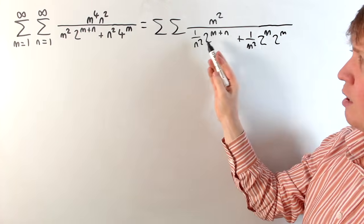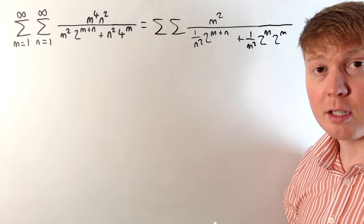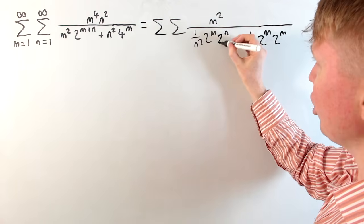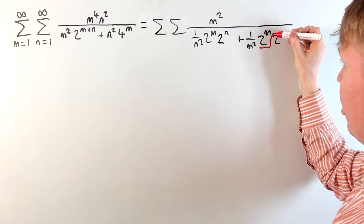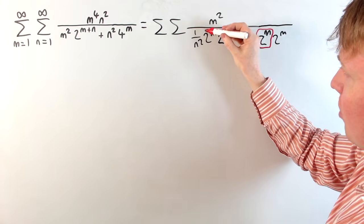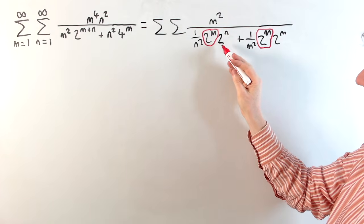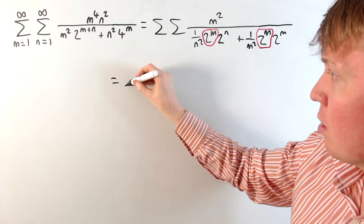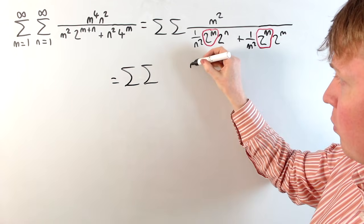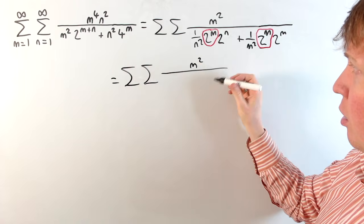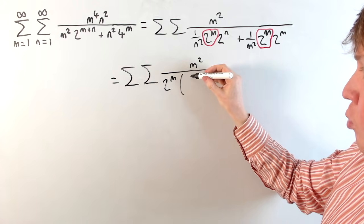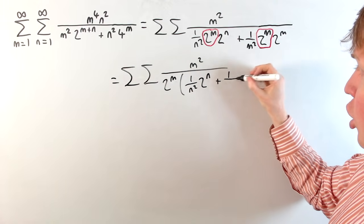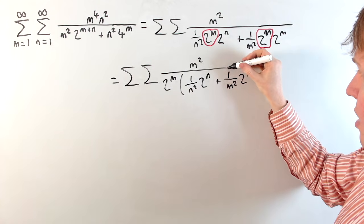We can do something similar: 2 to the m plus n is the same as 2 to the m times 2 to the n. If we do that, we see that common factors emerge. We've got a common factor of 2 to the m in the denominator, which is quite nice, and then we get a term that just has n, and this term just has m in it. So we can rewrite this whole sum as the double sum of m squared in the numerator, and taking out this factor of 2 to the m, we get 1 over n squared times 2 to the n, plus 1 over m squared times 2 to the m.